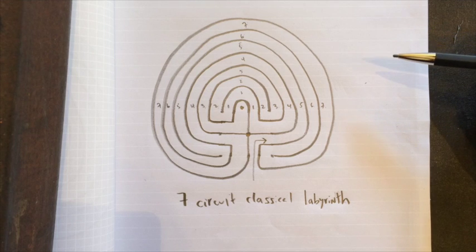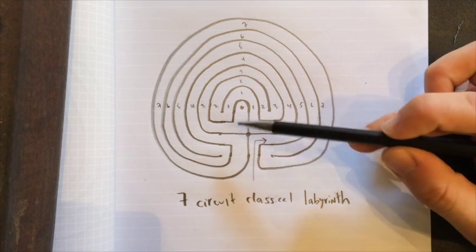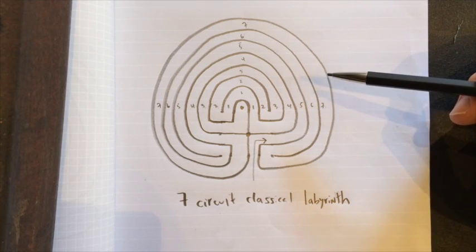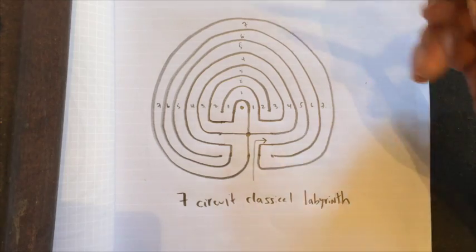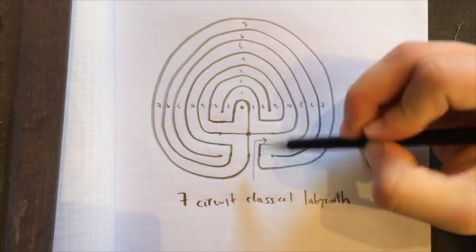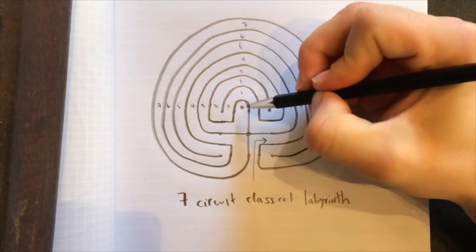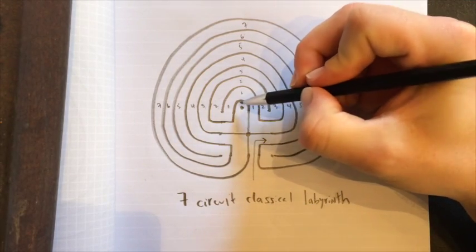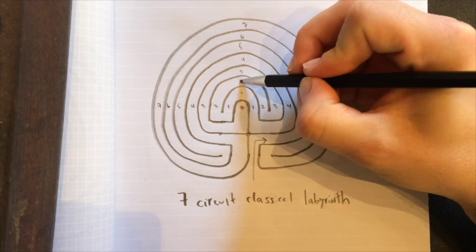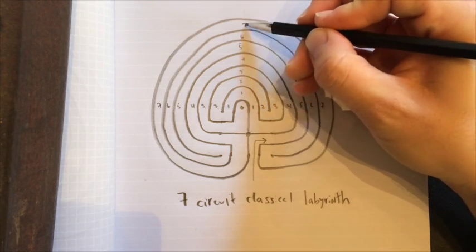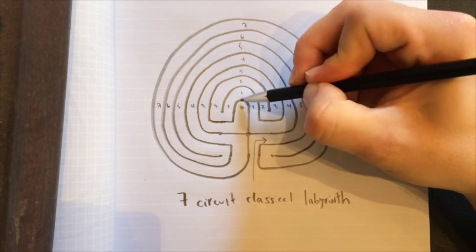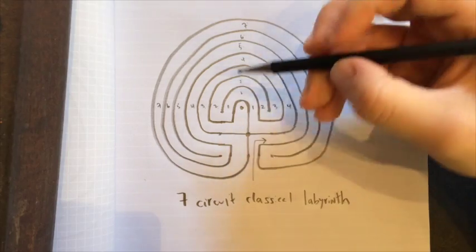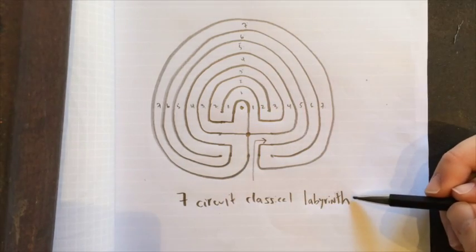The way that the labyrinth is named is not only by its design, but also by the number of circuits. If you walk or trace this labyrinth and arrive at the center, then count the number of paths that surround you. There are seven paths surrounding this center, so it is a Seven Circuit Classical Labyrinth.